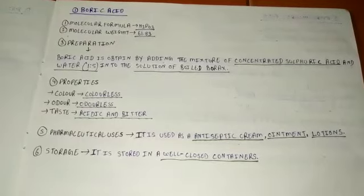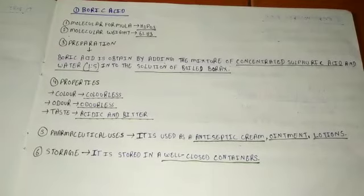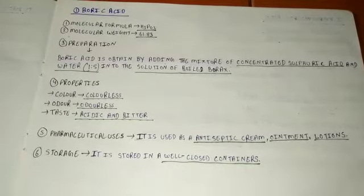First, the molecular formula of boric acid is H3PO3. Second, its molecular weight is 61.83.